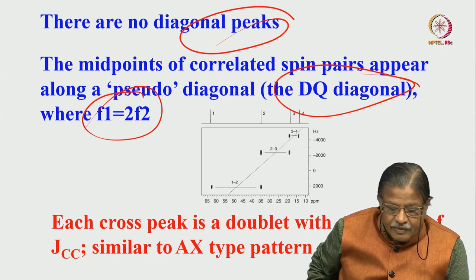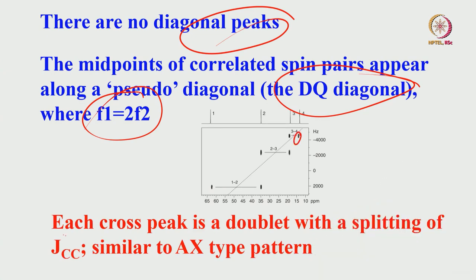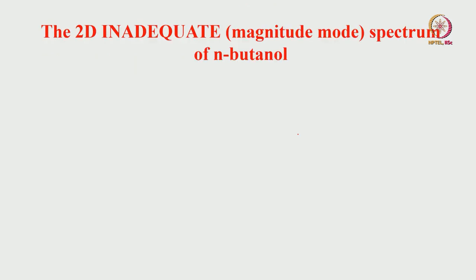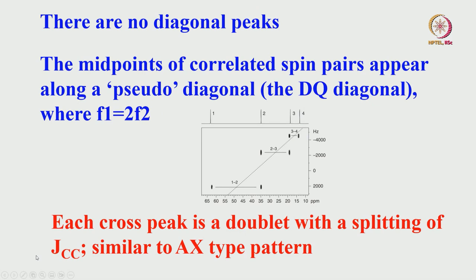To interpret the INADEQUATE spectrum: start with one peak you can confidently assign, go horizontally to find which carbon it is coupled to — that carbon's chemical shift is now known. These two are correlated and coupled to each other. Come down vertically and then go horizontally again; you will hit another carbon. Come down, go horizontally, hit another carbon. When coming vertically down, you stay on the same chemical shift; when going horizontally, you hit another carbon coupled to it. Like this, you can trace out all the carbon connectivities.